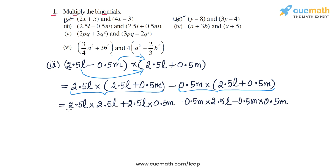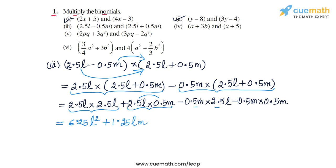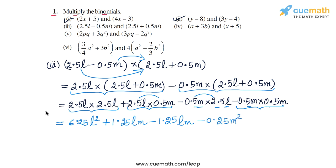Now we find the values. 2.5L into 2.5L: 2.5 times 2.5 is 6.25 and L times L is L squared, giving 6.25L squared. Then 2.5L into 0.5M: 2.5 times 0.5 is 1.25, giving 1.25LM. Then minus 0.5M into 2.5L: minus 0.5 times 2.5 is minus 1.25, giving minus 1.25LM. And minus 0.5M into 0.5M: 0.5 times 0.5 is 0.25, so minus 0.25M squared.